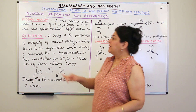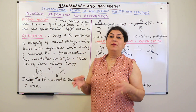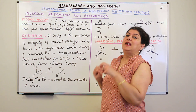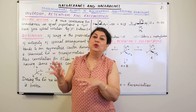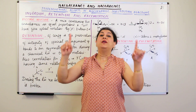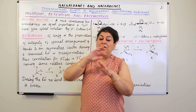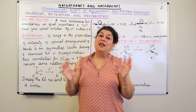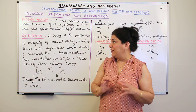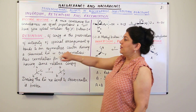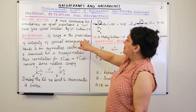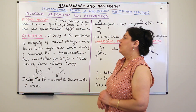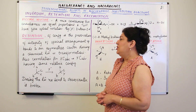The next stereochemical aspect we need to know is retention. In a chemical reaction, sometimes retention of configuration takes place. Retention means preserving or keeping something. When I talk of configuration, I mean the arrangement of all the species around the central chiral carbon. If that arrangement is retained and not disturbed, we say the reaction took place with retention of configuration. Retention of configuration is the preservation of the integrity of the spatial arrangement of bonds to an asymmetric center during a chemical reaction.